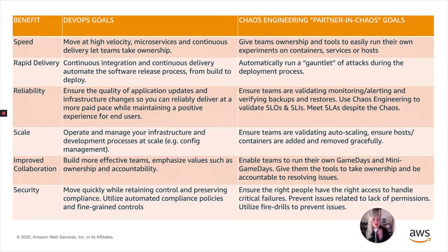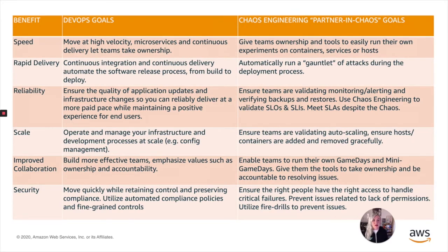For scale, we can ensure that teams are validating auto-scaling and that hosts and containers are added and removed gracefully so that customers are always served. We can improve collaboration by enabling teams to run their own game days and giving them tools to take ownership and be accountable for resolving issues. And lastly, security — we can ensure that the right people have the right access to handle critical failures. You can prevent issues by injecting failure on purpose up front and making sure everyone has the right permissions to resolve issues when it's critical. You can utilize fire drills as a practice to prevent issues.